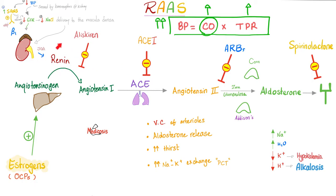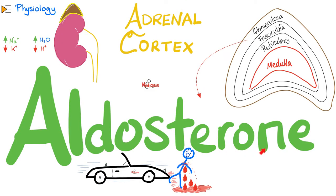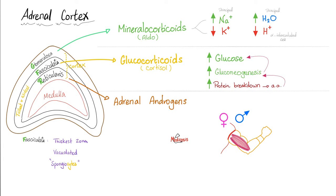Aldosterone comes from the zona glomerulosa of the adrenal cortex. It's called 'sterone' because it has a steroid compound, and 'aldo' because it has an aldehyde group. Aldosterone has four functions: it reabsorbs salt and water, and excretes potassium and hydrogen. Since sodium and potassium are minerals, we call aldosterone a mineralocorticoid — 'mineralo' for minerals, 'corticoid' because it comes from the adrenal cortex.